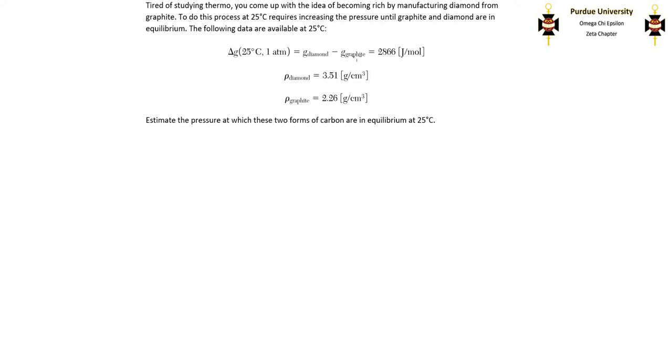I'm going to start by defining dG by its fundamental relation. In this case, the temperature is fixed at 25 degrees Celsius, so in the definition of dG, the negative SdT term is going to go to zero, and we're left with dG equals VdP.